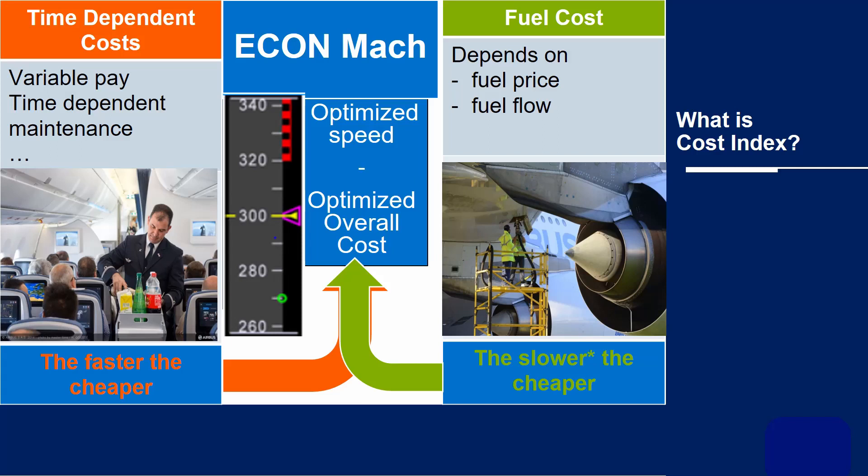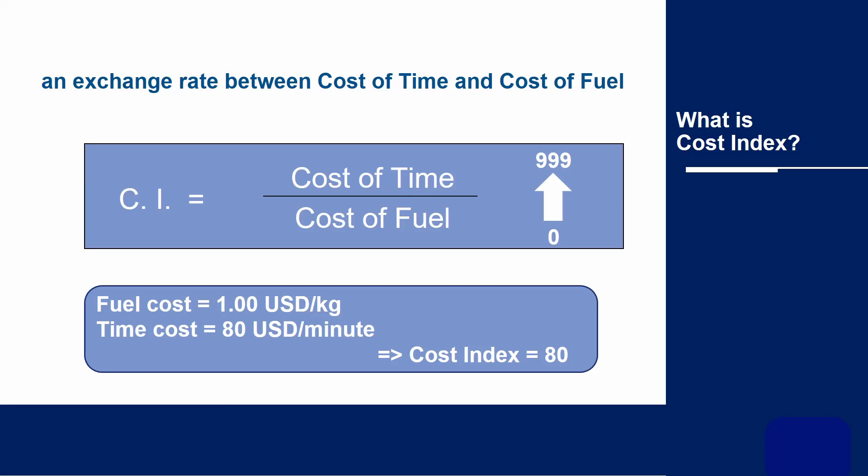Now this is what Cost Index does. Cost Index is an exchange rate between the cost of time and the cost of fuel. A high Cost Index means that for your airline, flight time is very important. A low Cost Index means that fuel costs dominate. As an example, a Cost Index of 80 means that one minute more flying time costs the same as 80 kilograms of fuel.